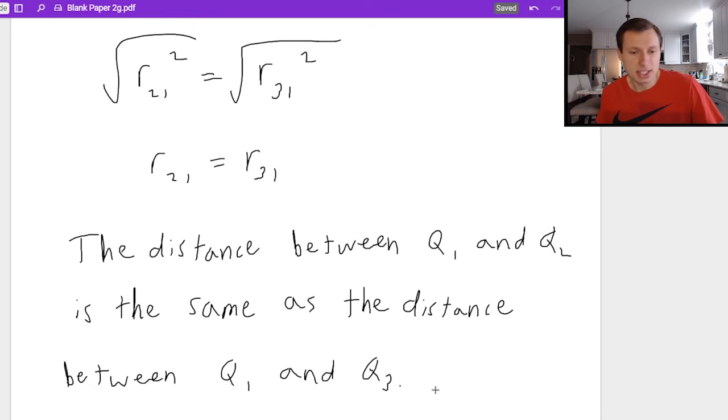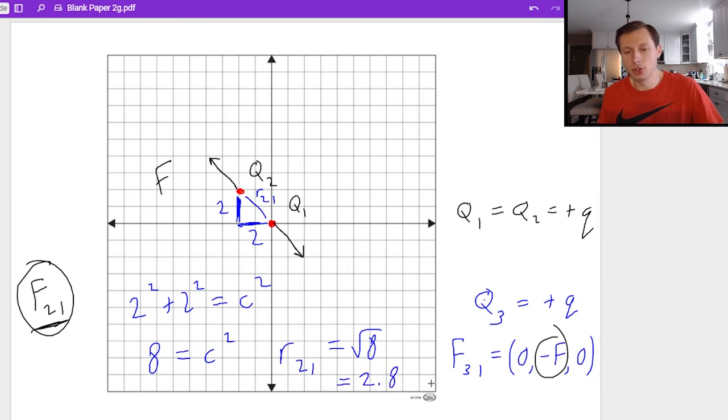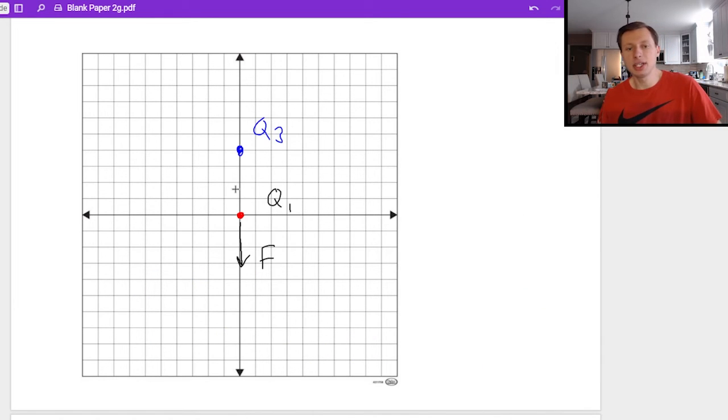So now all we need to do is find the distance between q one and q three. So looking back at my original picture, here's the distance r21, it looks like it's two to the left, and two up. And if I want to find the total distance, I just need to use Pythagorean theorem. So two squared plus two squared equals c squared, that's going to be four plus four, so eight, eight equals c squared. And that means the distance r21, the distance between one and two is going to be the square root of eight, which as a decimal is about 2.8.